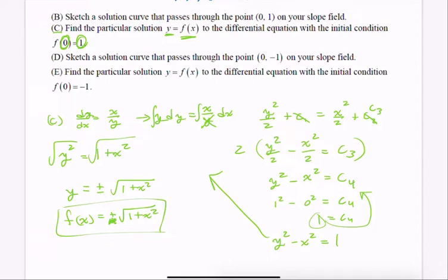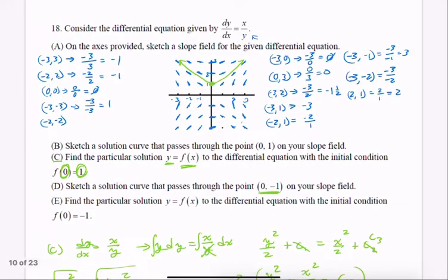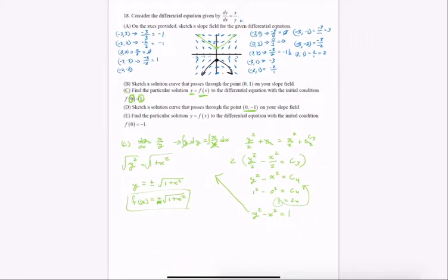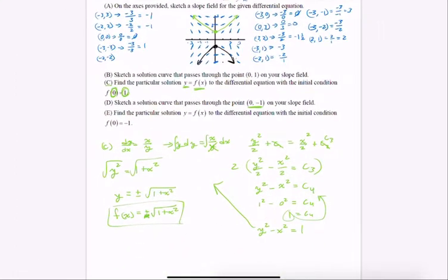And then the rest of the problem pretty much does the same thing. Except this time, you use 0, negative 1. 0, negative 1 is right here. And so when you graph that, that's what you would have. Look at that. That is definitely a hyperbola. Do you guys remember doing those? I hope so.